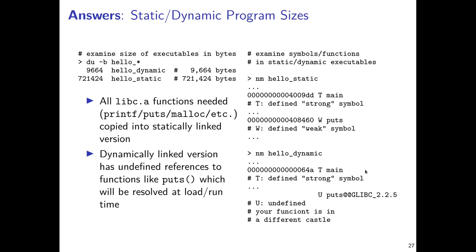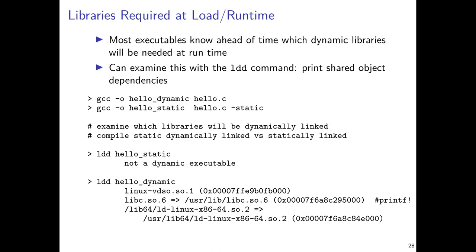In the dynamic version, you'd still see a strong definition for main, but puts is marked 'U' — undefined — because the cost of making the executable smaller means leaving out definitions and relying on the dynamic loader to attach them through virtual memory at runtime. This creates potential problems, which is why tools like `ldd` are useful — they tell you what dynamic libraries a program needs. A static executable needs nothing, but a dynamic executable almost always has dependencies.